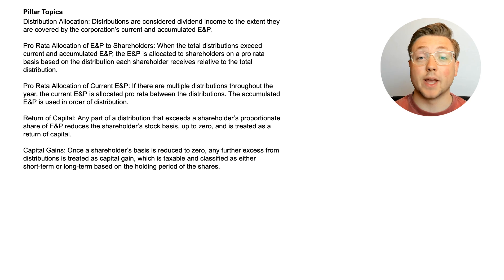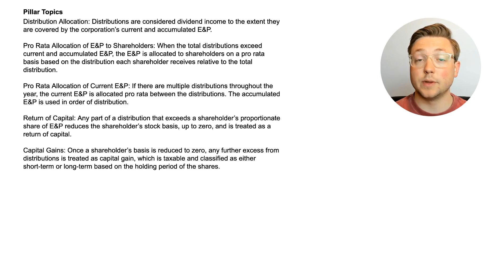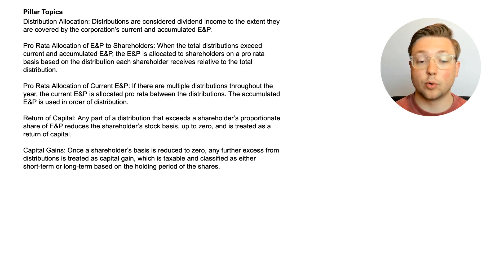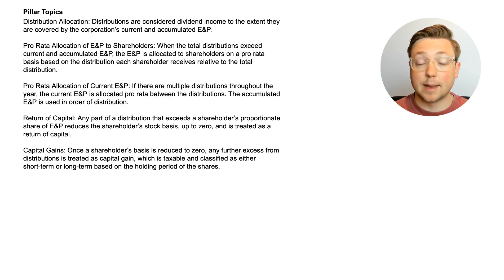Here are the pillar topics. First, distributions are considered dividend income to the extent they are covered by the corporation's current and accumulated E&P. When total distributions exceed current and accumulated E&P, the E&P is allocated to shareholders on a pro-rata basis based on each shareholder's distribution relative to the total. If there are multiple distributions throughout the year, current E&P is allocated pro-rata between the distributions, while accumulated E&P is used in order of distribution. Any part of a distribution exceeding a shareholder's proportionate share of E&P reduces the shareholder's stock basis to zero and is treated as a return of capital. Once the basis is reduced to zero, any further excess is treated as a capital gain, taxable and classified as short-term or long-term based on the holding period of the shares.